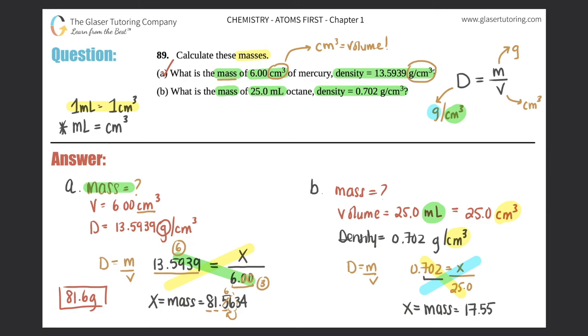We just need the proper sig figs. You get 17.55 in the calculator, but in this number there's three sig figs - this zero does not count because it's a leading zero. And in 25.0 there is also three sig figs - this zero counts because it's a trailing zero. So we have 17.6 grams. That's the answer for part B.